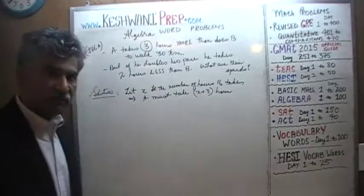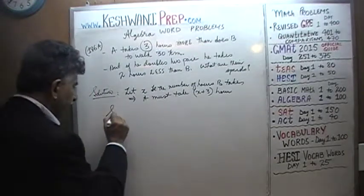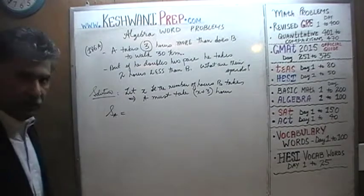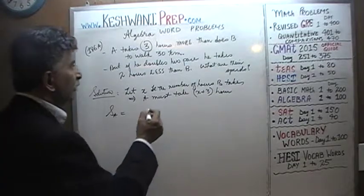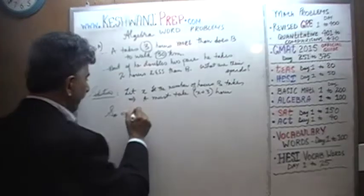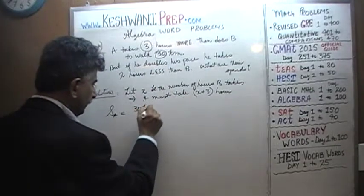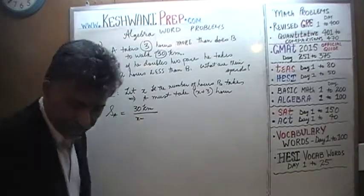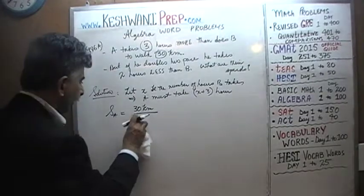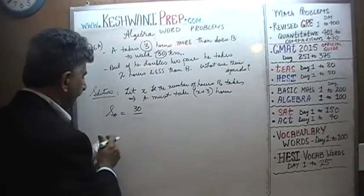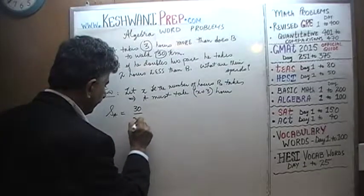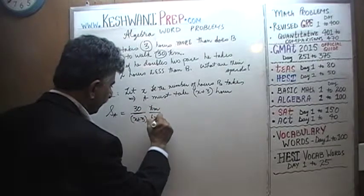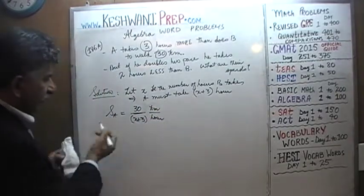Now we can figure out their respective speeds. Speed of A — S subscript A — is simply 30 kilometers divided by X plus three hours. So that gives us kilometers per hour, which is the speed of A.